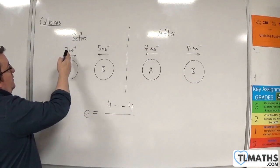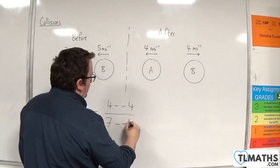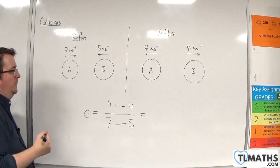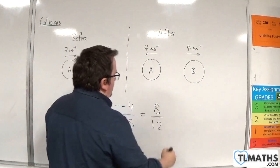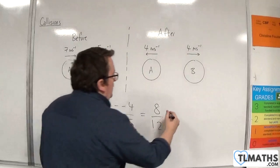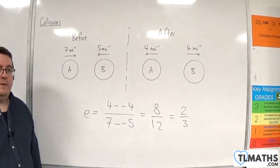which will be 7 take away minus 5. So we'll have 8 in the numerator and 12 in the denominator, so 8 twelfths is 2 thirds. And that's the coefficient of restitution in this situation.